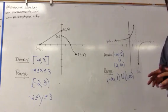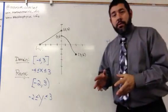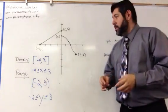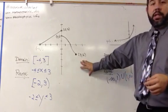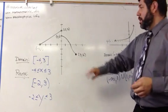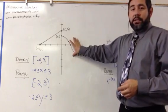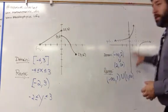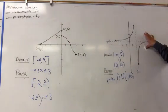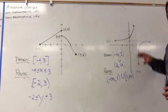Alright, so those are two examples of doing domain and range and putting them in interval notation — for a piecewise defined function and for a rational function that has asymptotes.